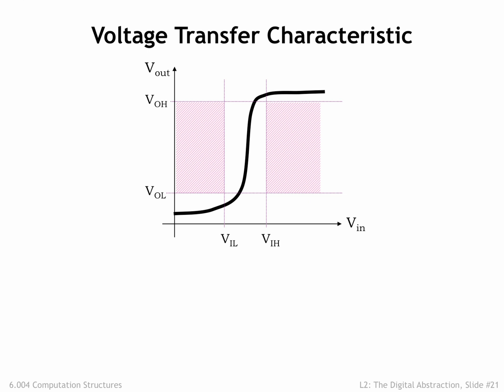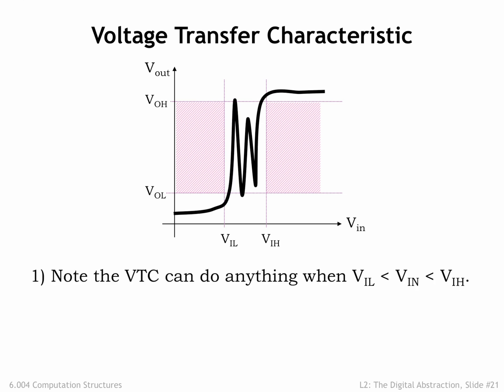There are two interesting observations to be made about voltage transfer characteristics. Let's look more carefully at the white region in the center of the graph, corresponding to input voltages in the range V sub IL to V sub IH. Note that these input voltages are in the forbidden zone of our signaling specification, and so a combinational device can produce any output voltage it likes and still obey the static discipline, which only constrains the device's behavior for valid inputs.